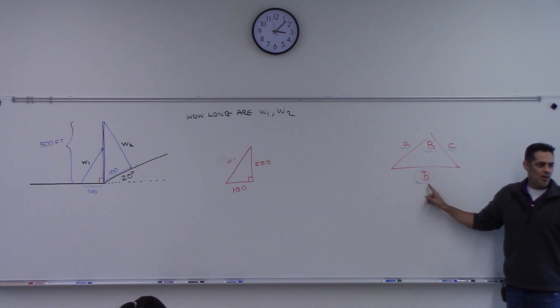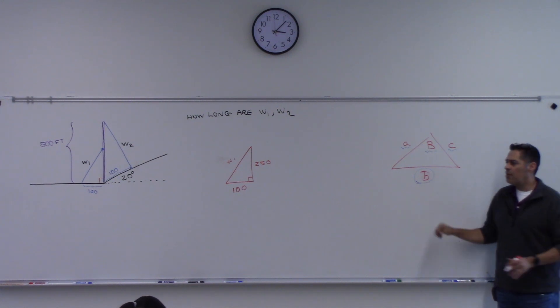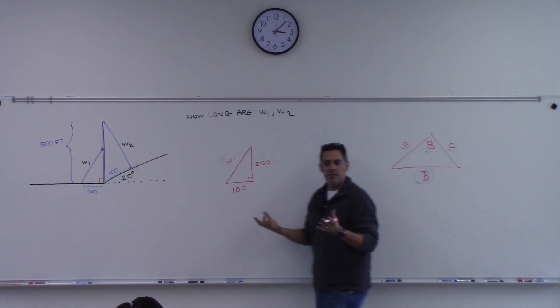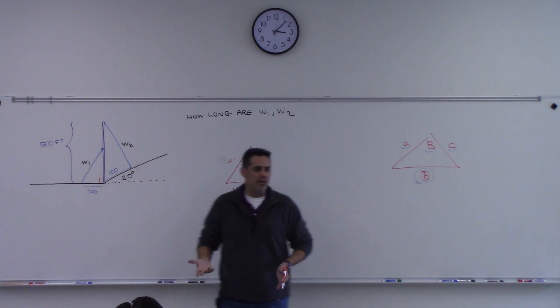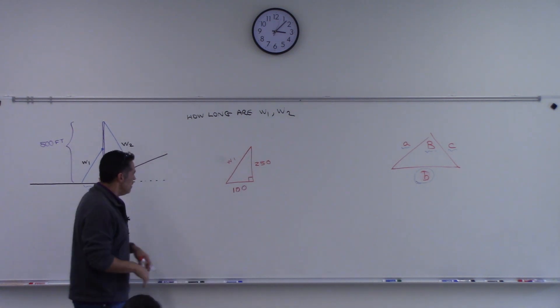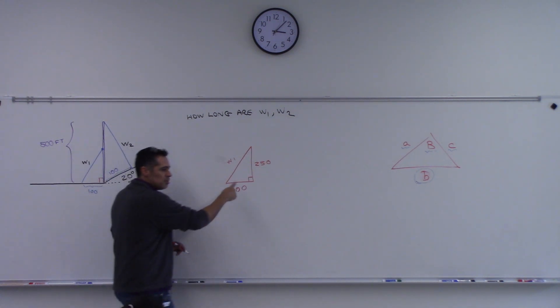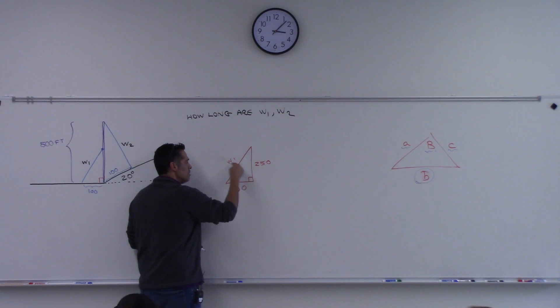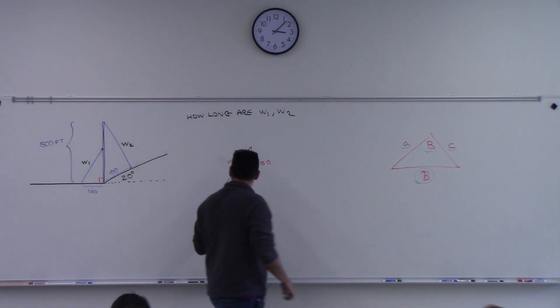You could almost argue that the law of cosines is a generalization of the Pythagorean theorem. But we don't need that here — we're just going to go straight to Pythagorean. This squared plus this squared equals this squared. Let's work that out.